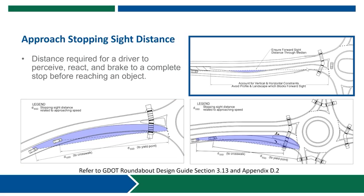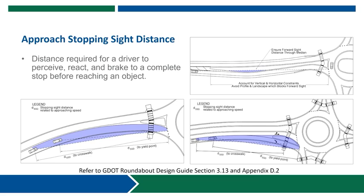Where we have horizontal curvature on the approaches, the sight lines need to be unobstructed through the medians and various elements of the approach reverse curvature, to make sure that we can still see the crosswalk and the yield line on those approaches.